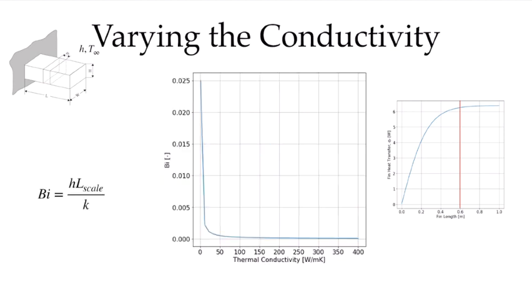Finally, let's look at the Biot number. It's the convection coefficient times a length scale, where the length scale is the cross-sectional area divided by the perimeter. A small Biot number is essential for using these one-dimensional solutions, ensuring that temperature is constant across a given x location so that conduction is based on the same temperatures as convection at the surface. As we go to lower and lower thermal conductivities, the Biot number gets larger and our one-dimensional assumption becomes more suspect. Fortunately, we would never make fins from materials with very low thermal conductivities because they won't do the job, so for fins of practical use the one-dimensional assumption is very good.